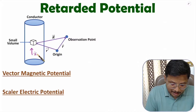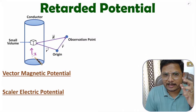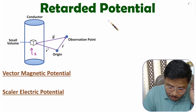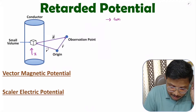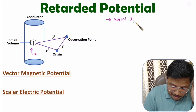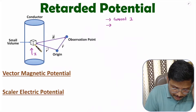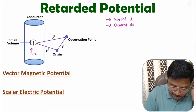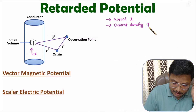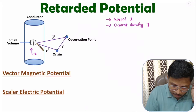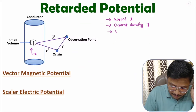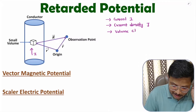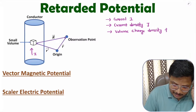Now, because of current I, there are a few quantities you need to understand. Here we have current I, and because of current I, associated with this small volume, we will have current density, denoted by J. Also, because of current I in this small volume, we will have volume charge density, denoted by rho_V.